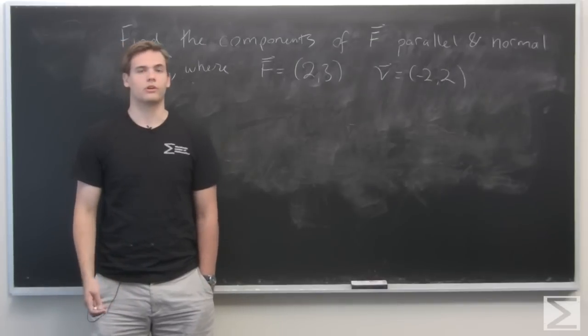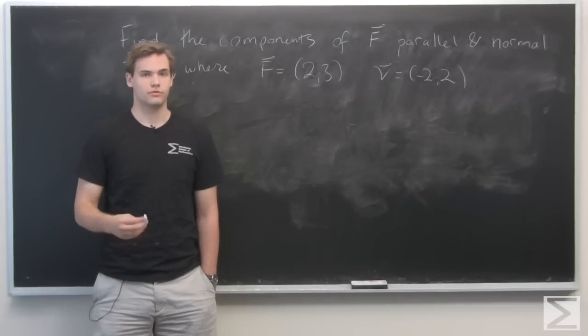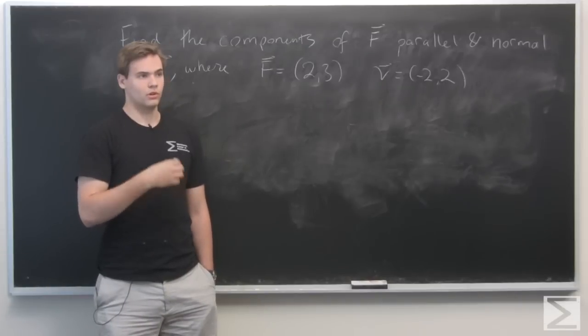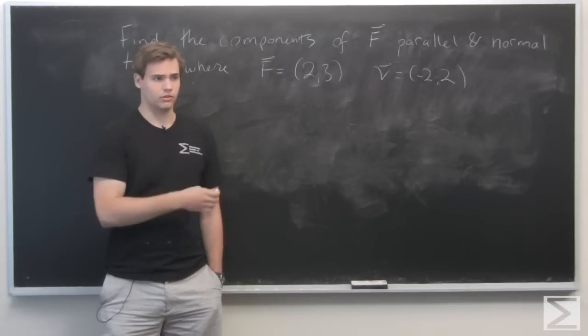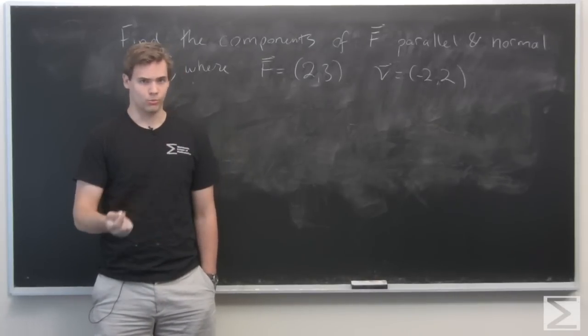So now that we have the dot product for vectors in Rn, we can use this to actually define the orthogonal projection of a vector onto another vector and normal components of a vector.